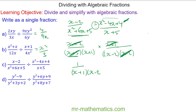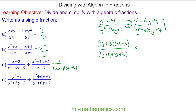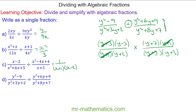For question d, the numerator factorizes using the difference of two squares to give y plus 3 and y minus 3 over y plus 1 and y plus 2. We change the divide to times and find the reciprocal, which is y plus 7 and y plus 1 over y plus 3 lots of y plus 3. We cross-simplify, leaving y minus 3 lots of y plus 7 over y plus 2 and y plus 3.